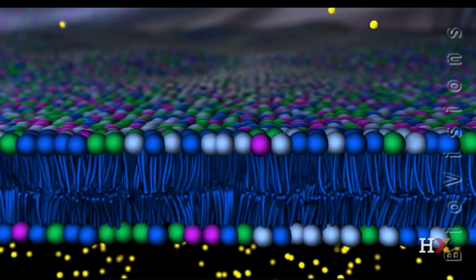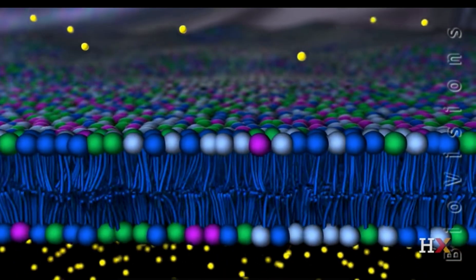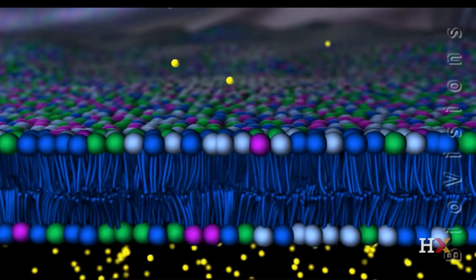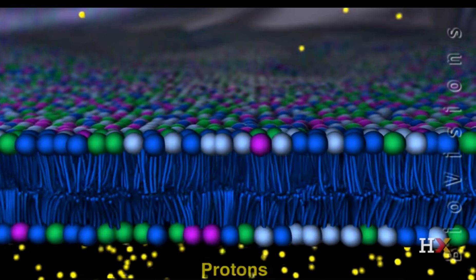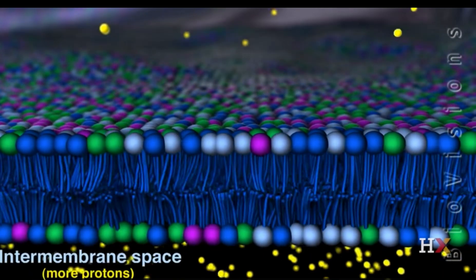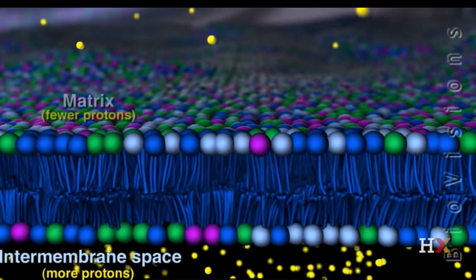One of the key roles of this membrane is to act as a barrier to positively charged particles called protons, thus allowing a concentration gradient to be maintained where the intermembrane space has far more protons than the matrix.